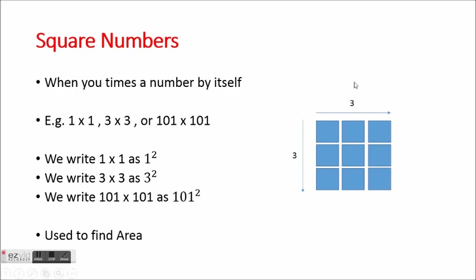We can put this in a diagram, which we use to work out the area of a shape. So three times three means three rows of three. To work it out, either you can know them off by heart, or you can do three squares down and three squares across and count the number of squares. So the answer to three times three, or three squared, is nine.